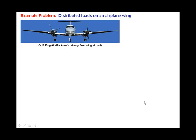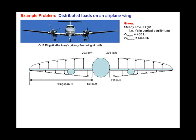Hello, welcome to a video on distributed loads. The C-12 King Air is the Army's primary fixed-wing aircraft. To ensure maximum aerodynamic efficiency, the wing has a parabolic lift distribution, as shown in the image here.